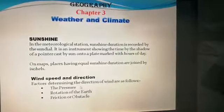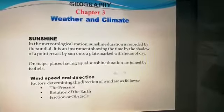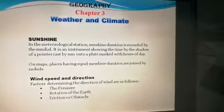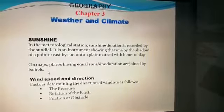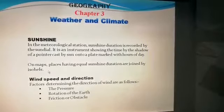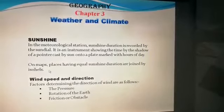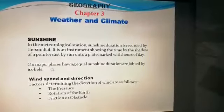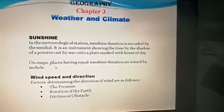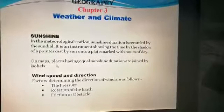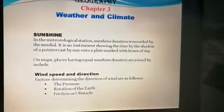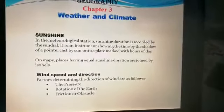On maps, places having equal sunshine duration are joined by isohels. An isohel is a line on a map which connects points having the same duration of sunshine.